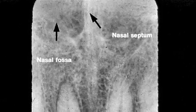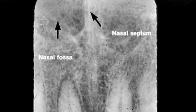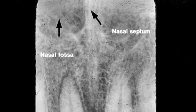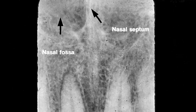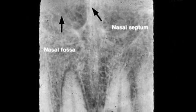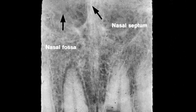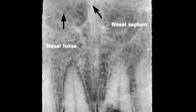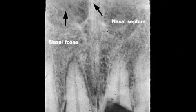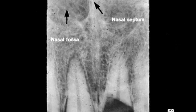The arrow in the center points to the linear radiopaque nasal septum. On either side of the septum are the radiolucent nasal fossae. On the earlier slide we saw the inferior nasal concha inside the nasal fossa; here we do not.